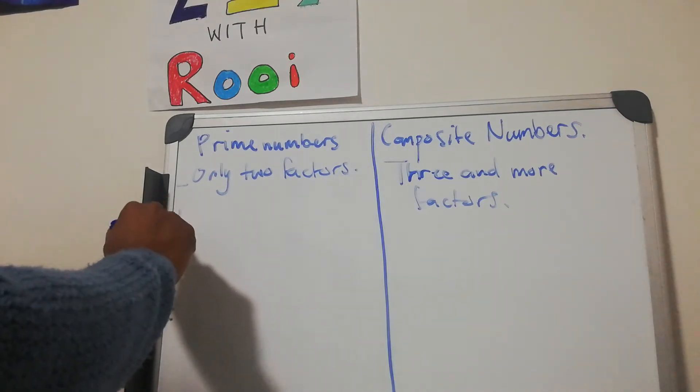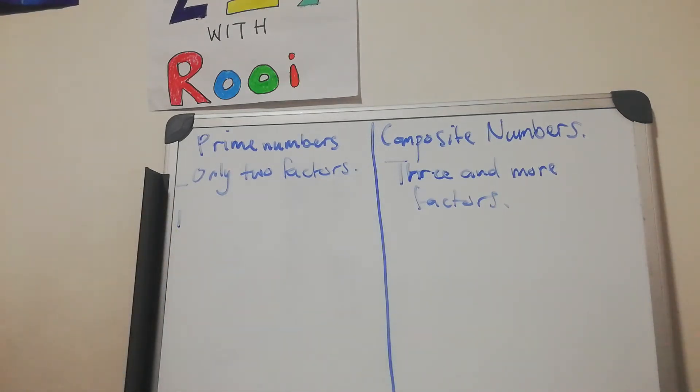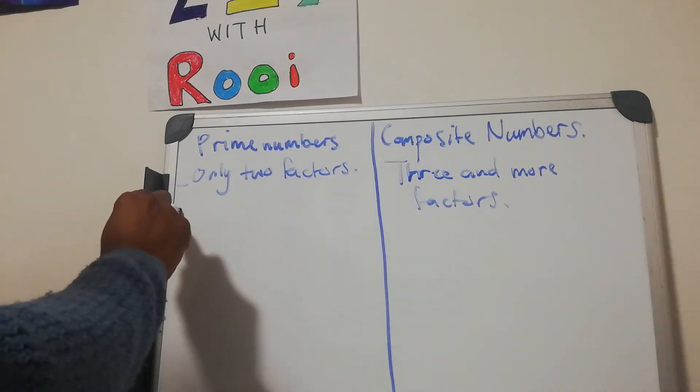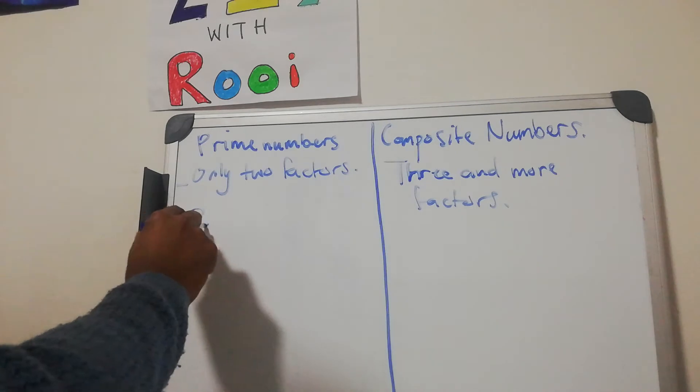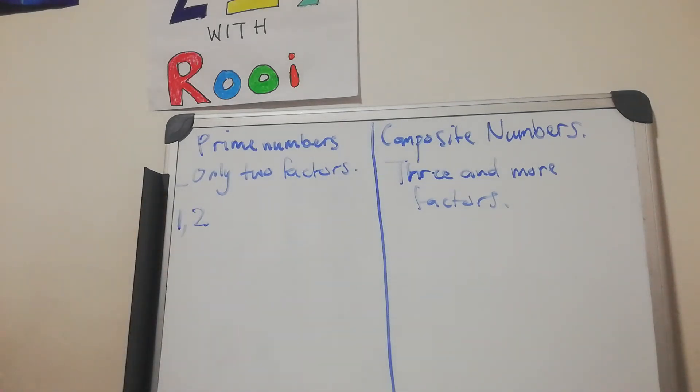Now prime numbers start at one, although one is not really recognized as a prime number but it is a prime number though. Then the next number is two because the numbers that divide into two are two and one itself. Remember when we talk about the factor that divides into this number, when that factor divides into this number there should be no remainder.